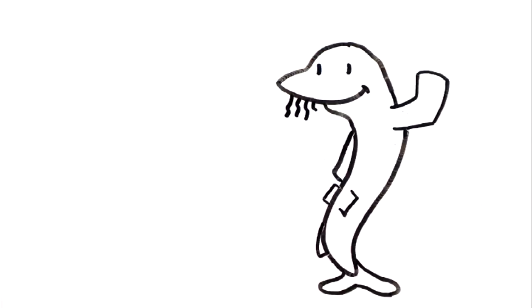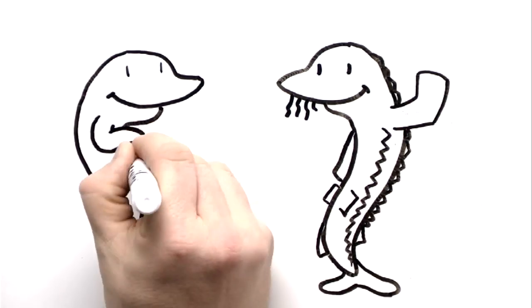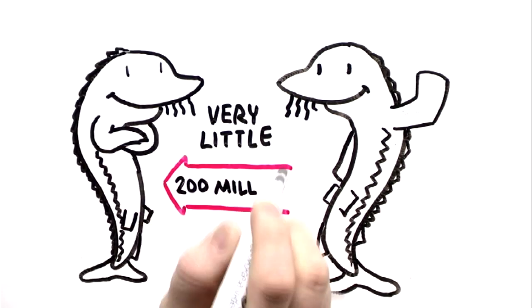The sturgeon is an ancient fish. They have evolved very little since they appeared about 200 million years ago.